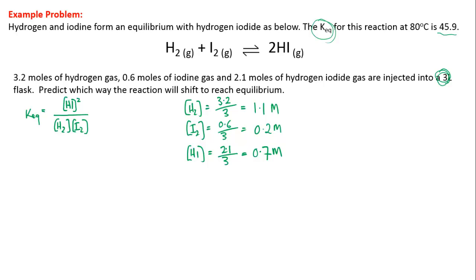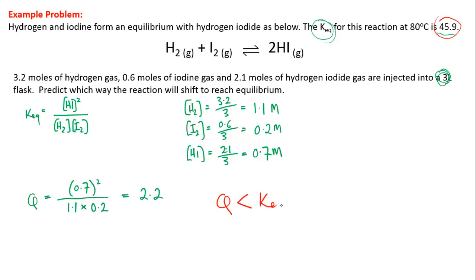To work out which way the reaction is going to shift, we evaluate Q by substituting these values into the equilibrium expression. Q equals the concentration of hydrogen iodide squared — so 0.7 squared — over the concentration of hydrogen times the concentration of iodine: 1.1 times 0.2. Evaluating that gives a value of Q of 2.2. In this case, Q of 2.2 is clearly less than Keq of 45.9.